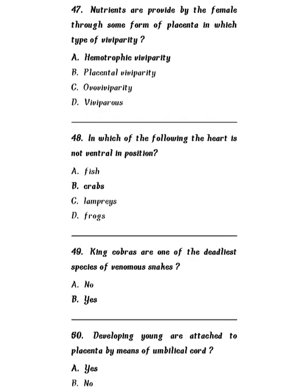Question 47: Nutrients are provided by the female through some form of the placenta in which type of viviparity? Options: haemotrophic viviparity, placental viviparity, ovo-viviparity, or totally viviparous? The correct answer is haemotrophic viviparity. Question 48: In which of the following is the heart not ventral in position? Fish, crabs, lampreys, or frogs? This is also a very important question. The correct answer is crabs. In crabs, the heart is not in the ventral position.